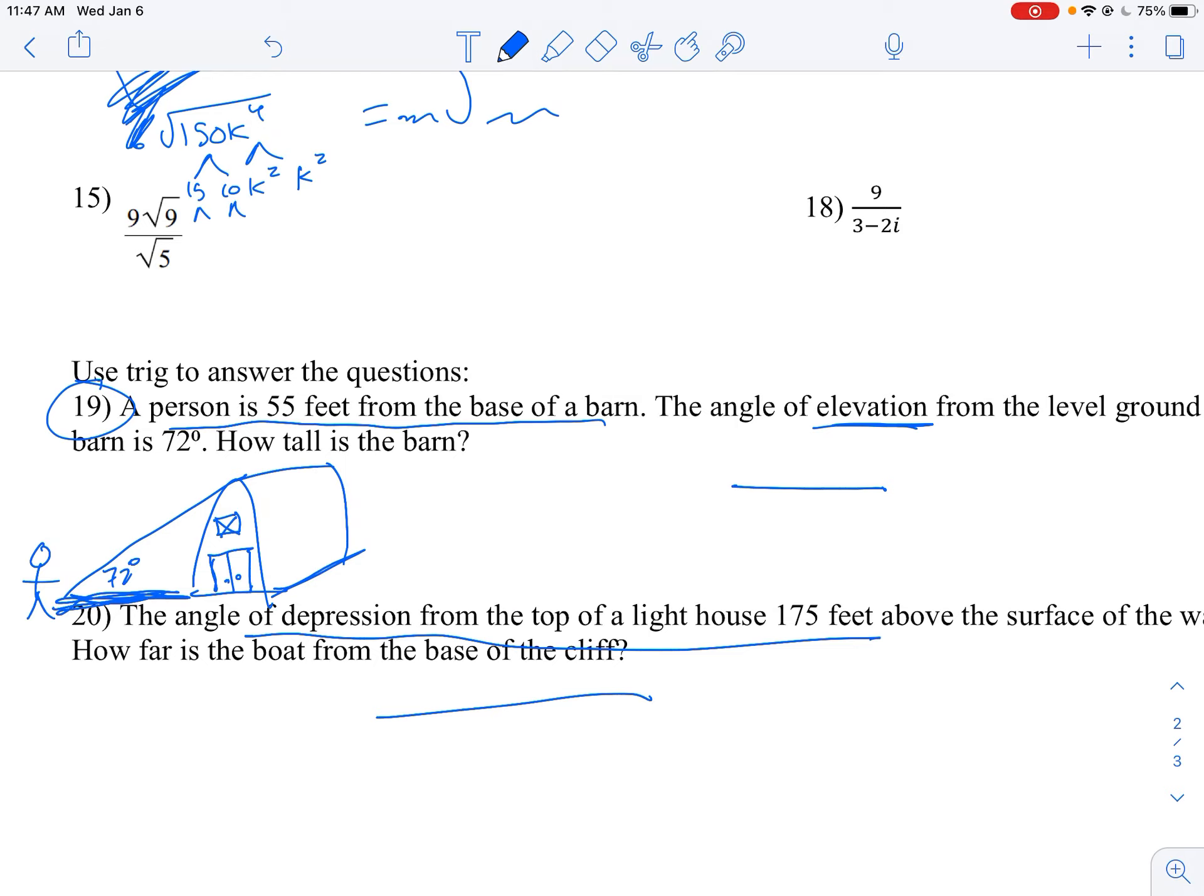So we got 72 degrees, 55 feet. And you need to figure out how tall it is, which when you do that, it makes a lovely right triangle. And to solve this, you need to set up a trig equation that includes two numbers you know and then the one you're looking for.